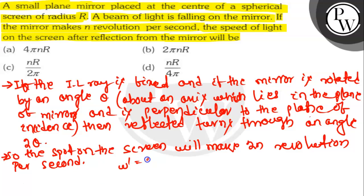That implies omega dash is equal to 2 into 2 pi n. So here, omega dash will be 4 pi n.